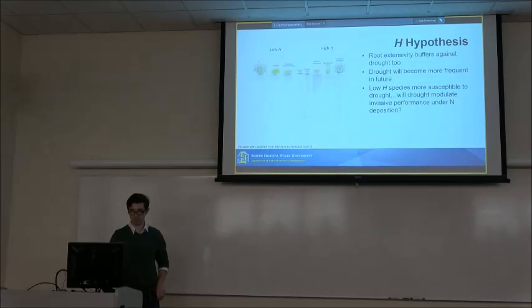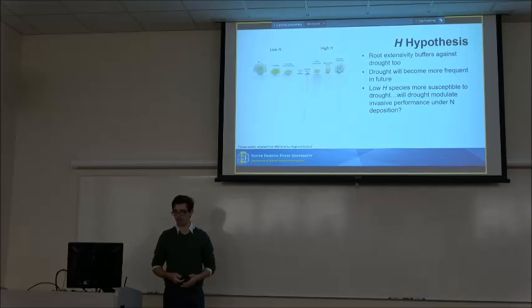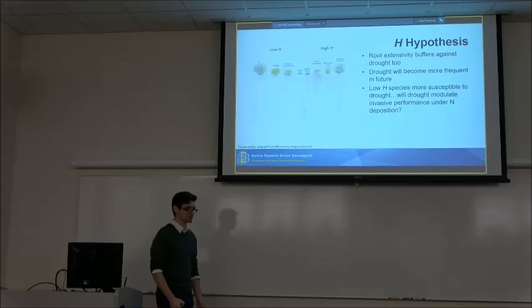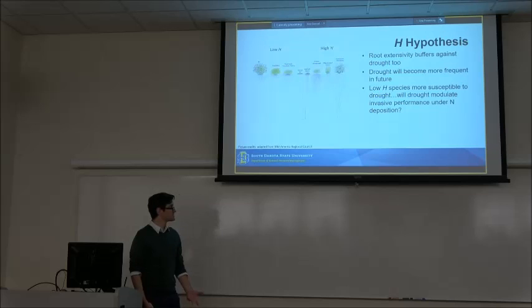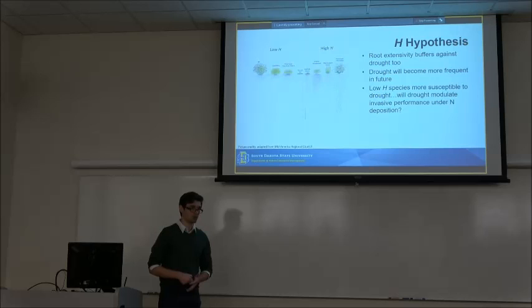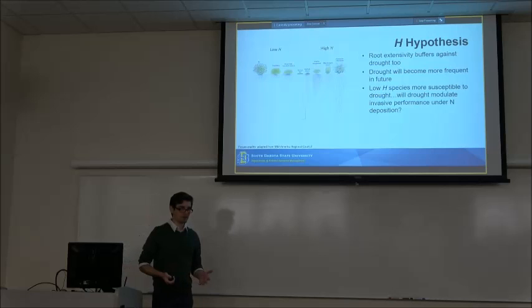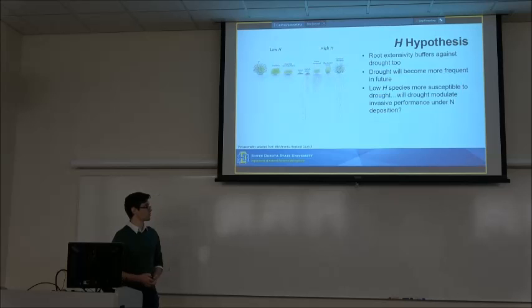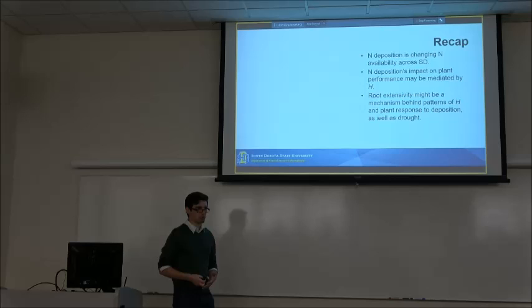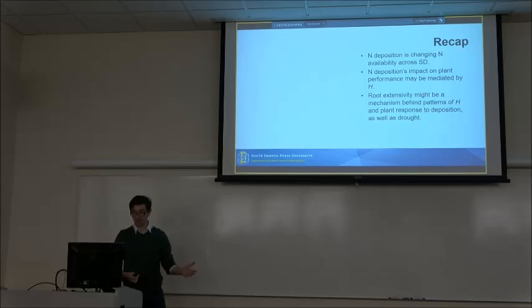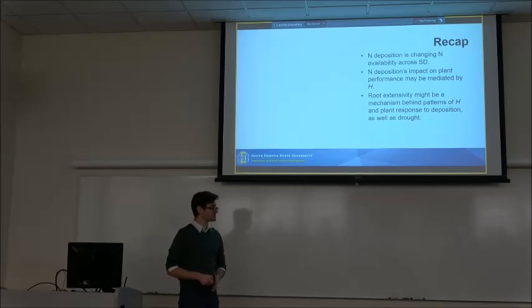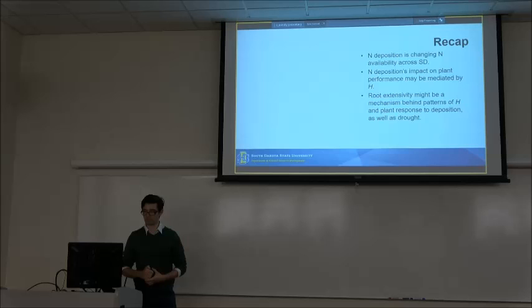Root extensivity could also explain the response of these plants to drought, where high-H species with extensive roots would be able to access deeper layers of water or lateral water resources. This is important to note because not only is nitrogen deposition increasing, but global climate change is expected to drive higher temperatures and higher evapotranspiration rates, leading to more frequent soil dry-downs. So competitive interactions already altered by nitrogen deposition may be further modulated by water availability in the soil. To briefly recap, nitrogen deposition is a problem impacting South Dakota in a gradient, it may impact the performance of invasive versus native species, and root extensivity might be the mechanism behind plant responses to deposition as measured by the H metric.